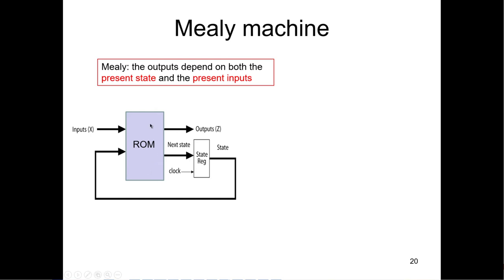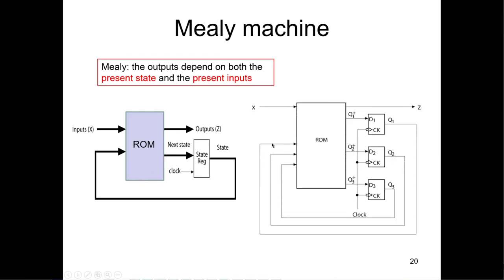You can put the ROM right in the combinational network. You have three flip-flops, driving D1, D2, and D3 inputs. The outputs Q1, Q2, Q3 go back to drive the ROM with the new state, and input X drives the ROM with the next X. That selects a row, which is presented to the D inputs. At the clock edge, the new state is latched in, then presented to the ROM, and the process repeats.